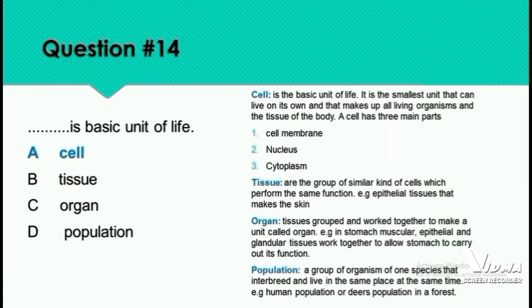The cell has three main parts: cell membrane, nucleus, and cytoplasm. When we combine similar cells, they give rise to tissues — for example, epithelial tissues that make the skin. In organs, different tissues work together. Tissues grouped together form an organ, such as the stomach, which has muscular and epithelial tissues. A group of organisms of one species at a specific location is known as a population — for example, the human population in a specific area.